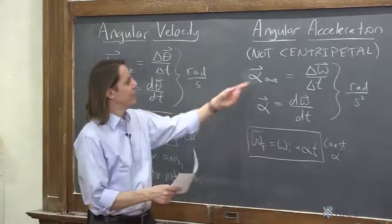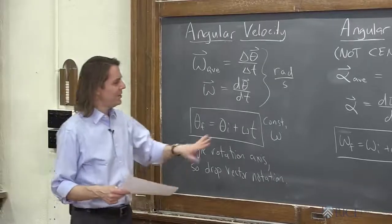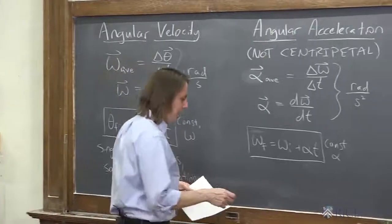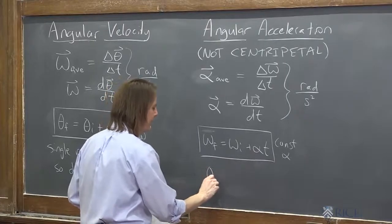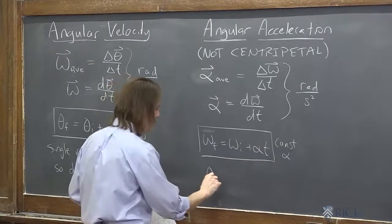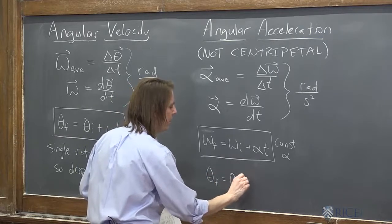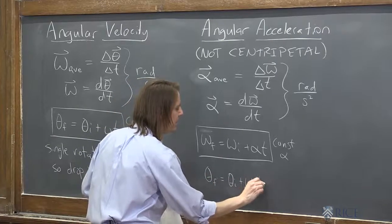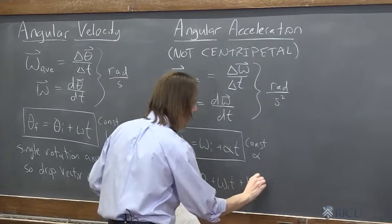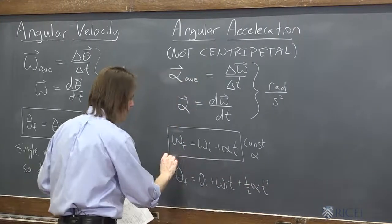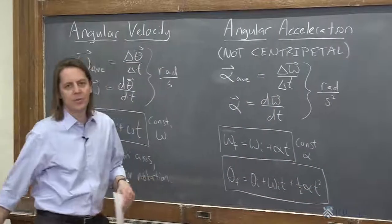We leave off the average notation because it's constant. And then we can also combine these and do some calculus to say what if we have constant angular acceleration and we want to know what happens to the position, the angular position. Theta final equals theta initial plus omega initial t plus one half alpha t squared. There you go. Also for constant alpha.